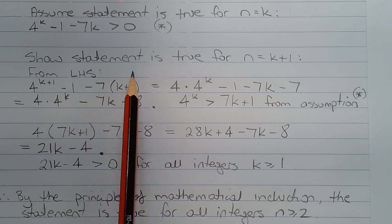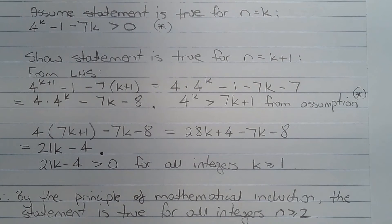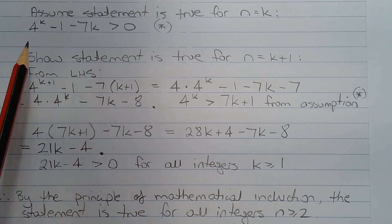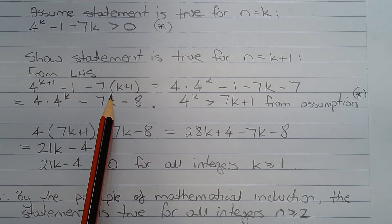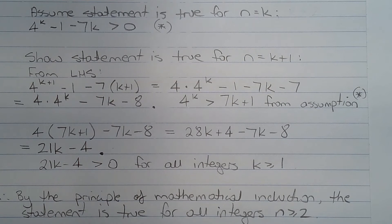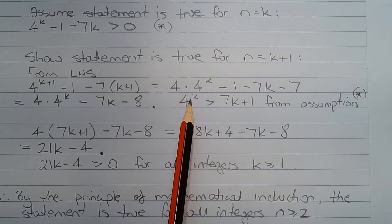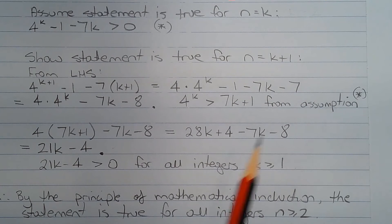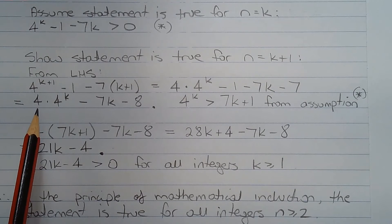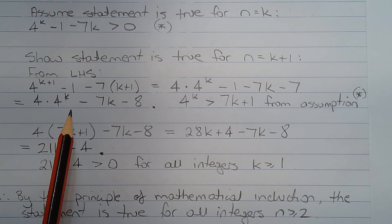Next we show the statement is true for n equals k plus 1. From the left hand side we have 4 to the power of k plus 1 minus 1 minus 7 times k plus 1, and that can be written as 4 times 4 to the power of k minus 1 minus 7k minus 7, which equals 4 times 4 to the power of k minus 7k minus 8.